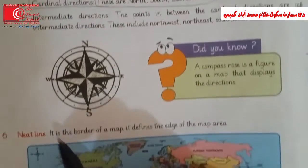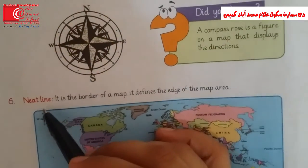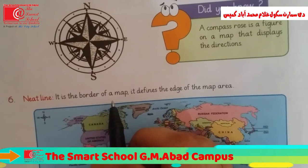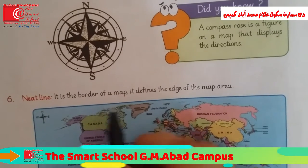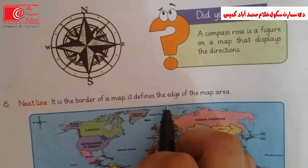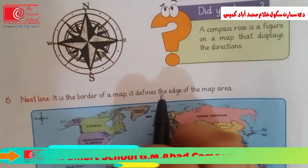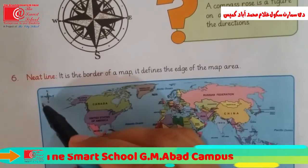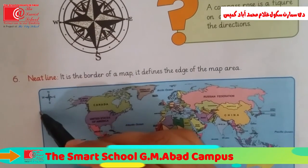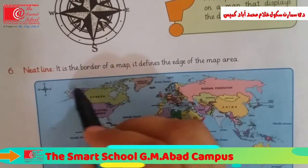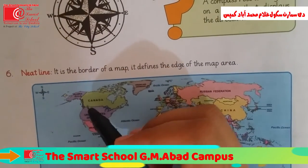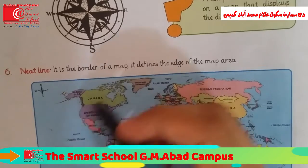The last feature is the neat line. It is the border of a map — it defines the edge of the map area. The dark lines show the edge of the map.